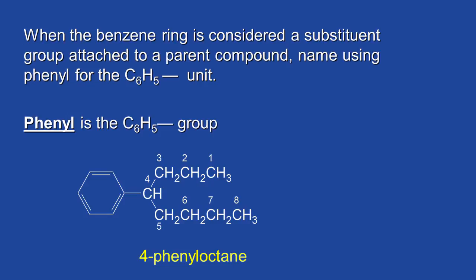There are going to be times when the benzene ring itself is considered a substituent group attached to a parent compound. Usually if the substituent has five or more carbons, then we would name the benzene ring as a substituent. When we name it as a substituent, we call it the phenyl group. In this case here we have a substituent that has more than five carbons, so we number the carbons as usual — this would be octane with eight carbons — and on carbon number four we have the phenyl group, so this would be 4-phenyloctane.